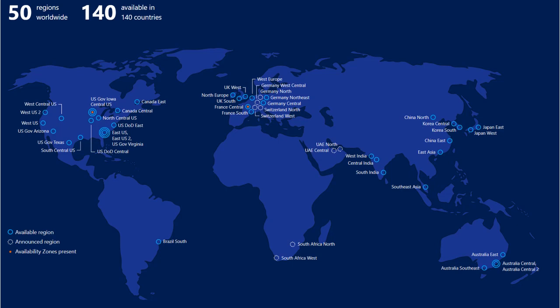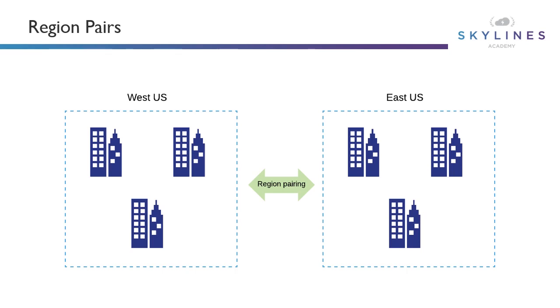For example, in central U.S. there are availability zones present — individual data centers inside that region that you can choose to place your workloads into, so you can get additional availability. You can see the global coverage. If you want to deploy your application and have it closer to your customers, you can do that. If you've got data sovereignty rules to adhere to, that allows you to keep data in the country of origin much more easily. There's also the concept of region pairs — when Microsoft Azure built the regions, they paired them up so that when they patch and do maintenance, only one region in the pair will be susceptible to maintenance at a particular time. So if you're choosing a second region, many customers have a primary region and a second region for failover, and knowing which one is paired is very important.